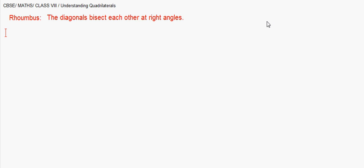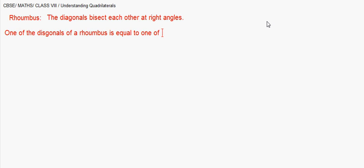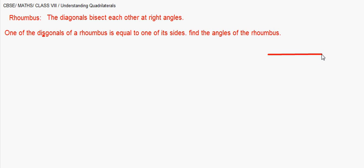The first question is: one of the diagonals of a rhombus is equal to one of its sides — find the angles of the rhombus. I made a spelling mistake for 'diagonals,' kindly ignore it. Let me draw a rhombus.